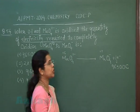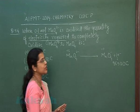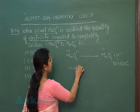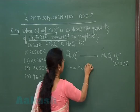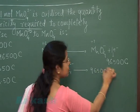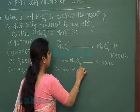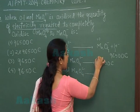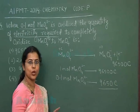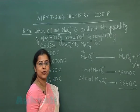In this question, 0.1 mole of MnO₄²⁻ is oxidized. If 1 mole of MnO₄²⁻ requires 96500 coulombs, then 0.1 mole will require 9650 coulombs. Therefore, the correct answer is option 3: 9650 coulombs.